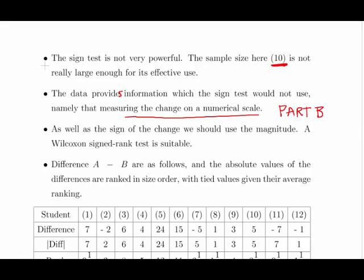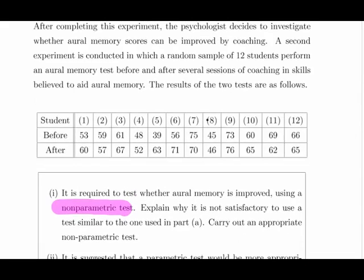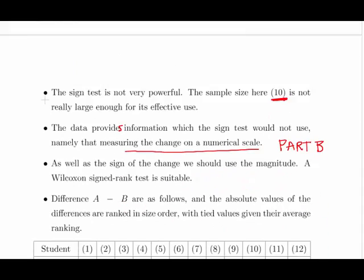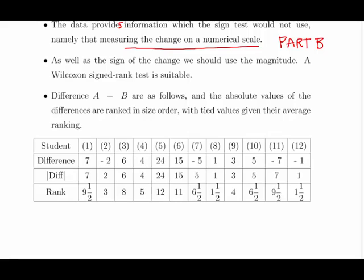This is now talking about part B here. And essentially what we are discussing here is these differences here. So 39 to 63, that's a difference of 24. This is a difference of plus 5, minus 1. These are important pieces of information that the sign test doesn't use. But we are trying to use a test that is as powerful and uses as much of the information as possible. So in this case, what we are going to use here is, as well as the sign of the change, we are going to use the magnitude. Wilcoxon signed-rank test is suitable here.